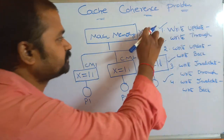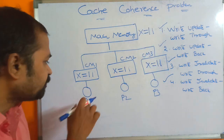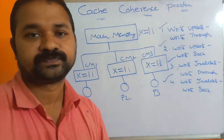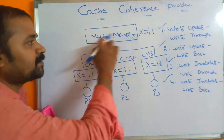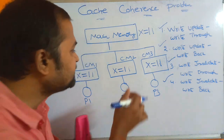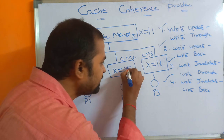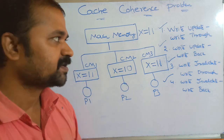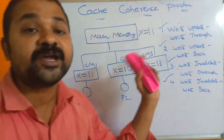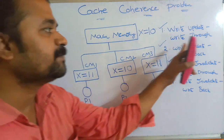Write through means if we update a value in cache, then that value should be updated in main memory also. For example, assume that all caches and main memory contain X = 11. If processor P2 performs a decrementation, X becomes 10 in CM2. Write through means main memory must also be updated to 10 immediately.